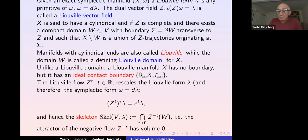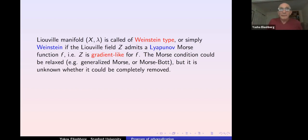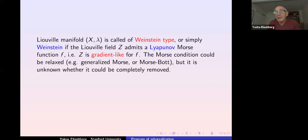Generally the skeleton could be just a volume-zero set, for instance a hypersurface. A Liouville manifold is called of Weinstein type, or simply Weinstein, if the Liouville vector field Z admits a Lyapunov–Morse function — equivalently, Z is gradient-like for this function. This Morse condition is a bit restrictive and can be relaxed to allow generalized Morse functions with cubic critical points. It is unknown whether the condition can be completely removed.